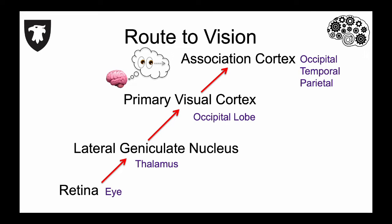These areas integrate visual perceptions with other types of information for more complex tasks, such as identifying objects and using vision to guide motion.